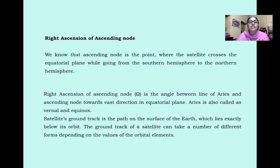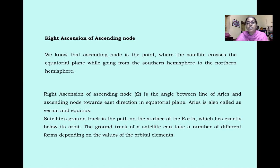Right Ascension of Ascending Node: The ascending node is the point where the satellite crosses the equatorial plane while going from the southern hemisphere to the northern hemisphere. Right ascension of ascending node is the angle between the line of Aries and the ascending node in the equatorial plane. Aries is also called the vernal equinox.